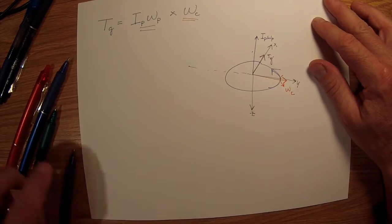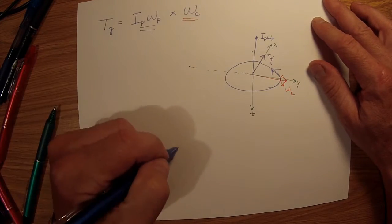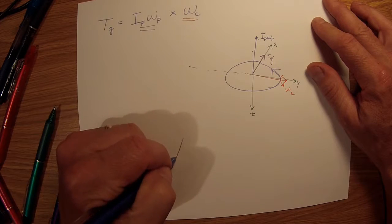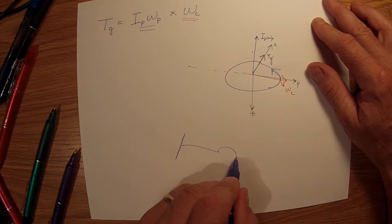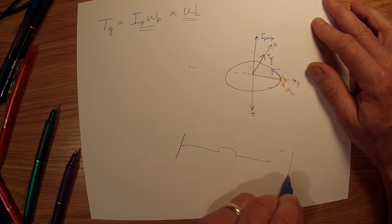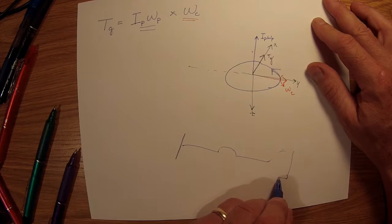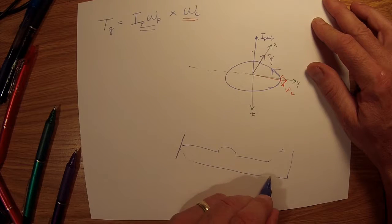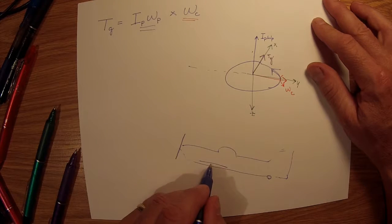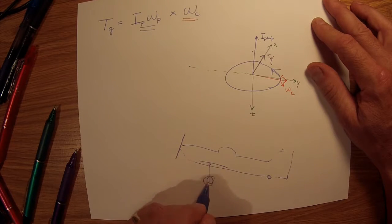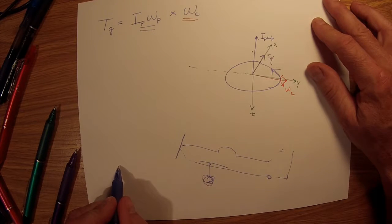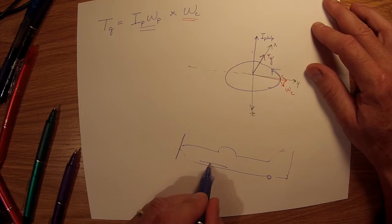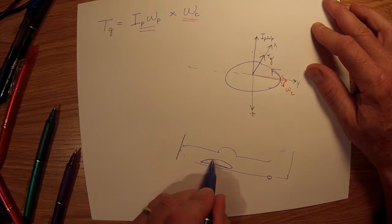In the example of a tail-dragging aircraft, which would be like a P-51 Mustang, let's say it's going down the runway. P-51, pretty cool-looking airplane. It's going down the runway like this, the wheels dragging—it's got the wheels on the wings, right?